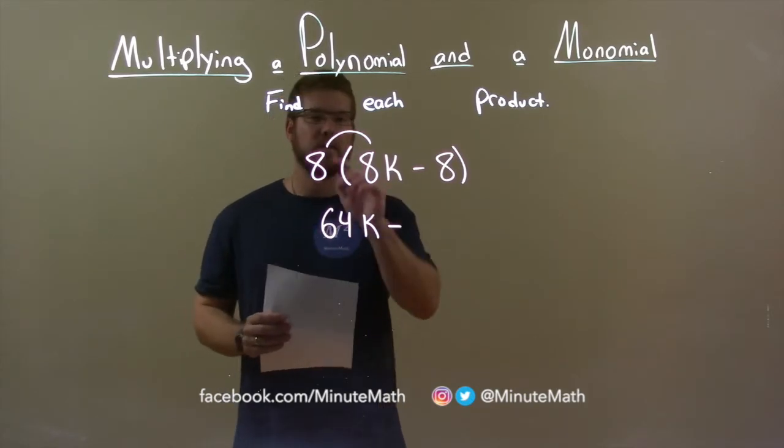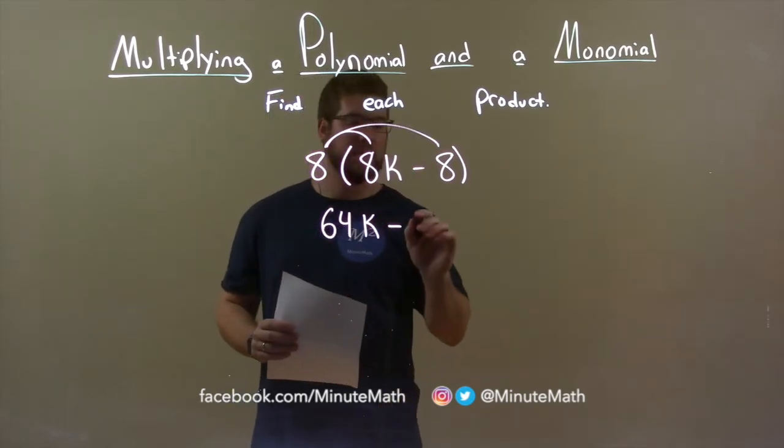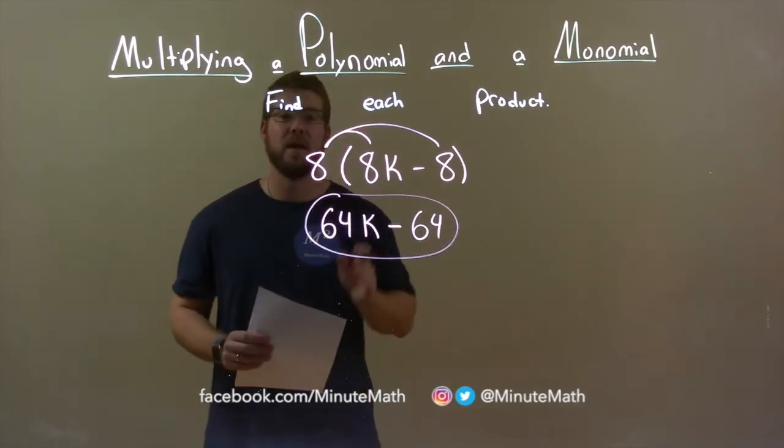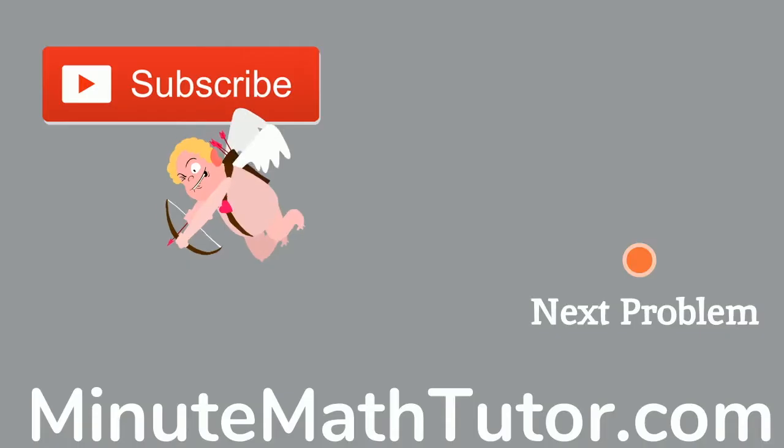Now let's multiply 8 by the second term. 8 times 8 is 64. There we have it, our final answer: 64k minus 64.